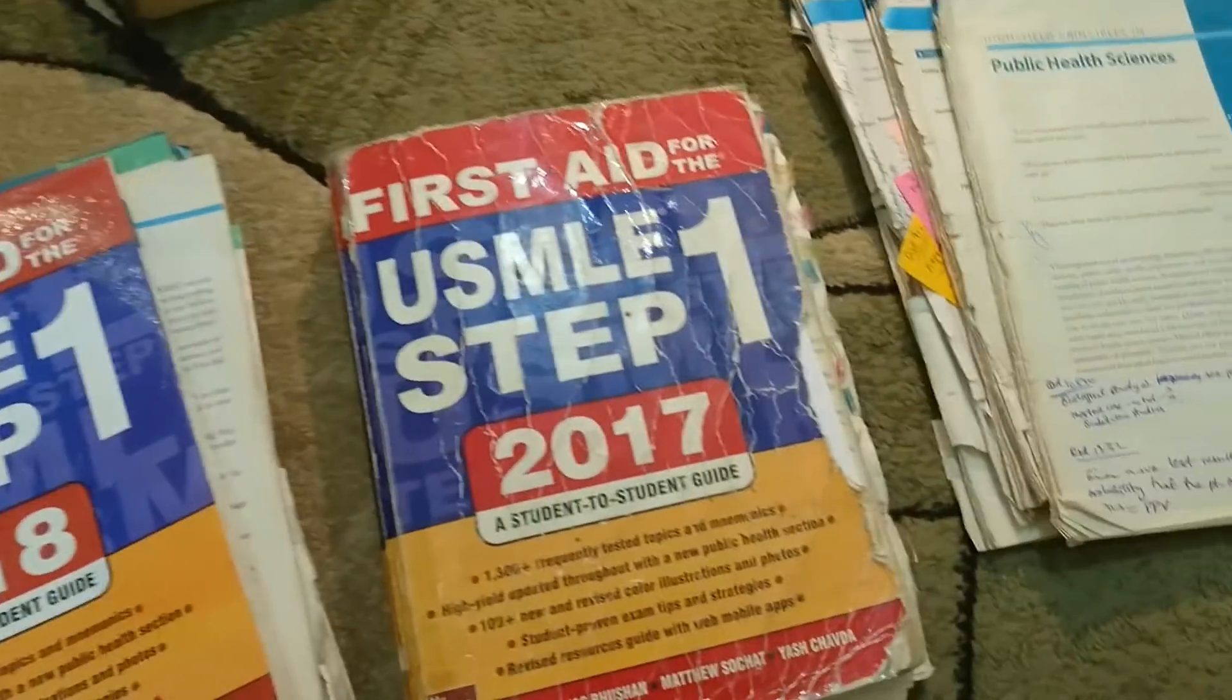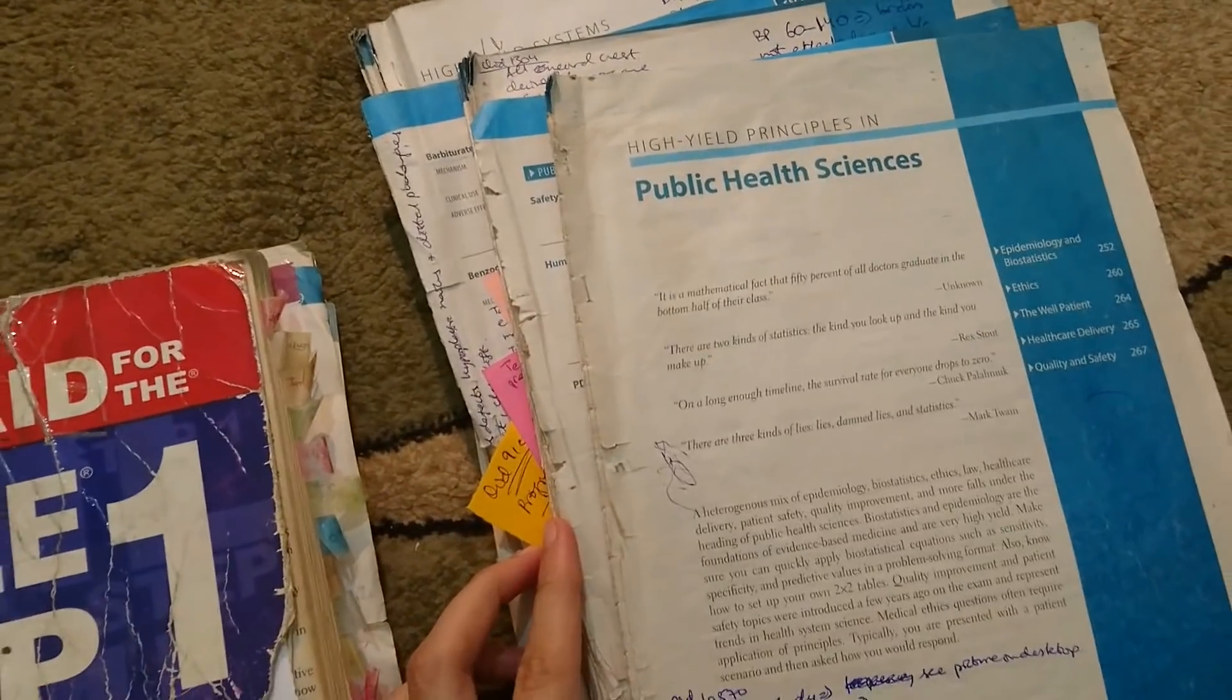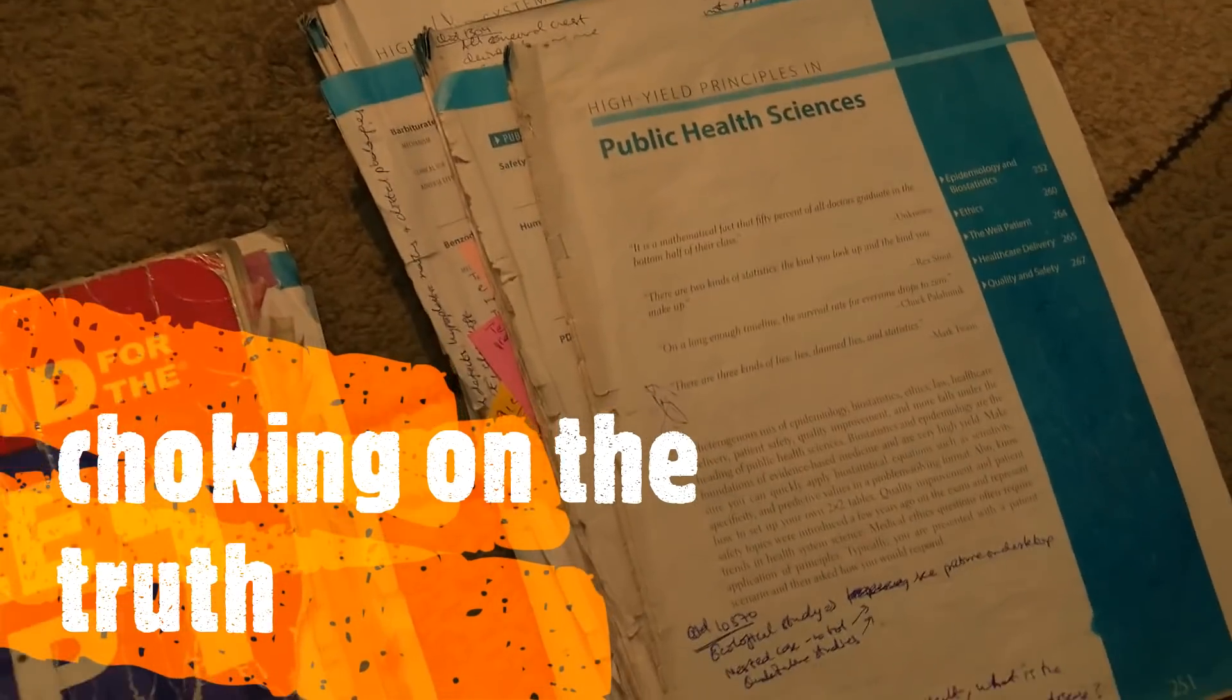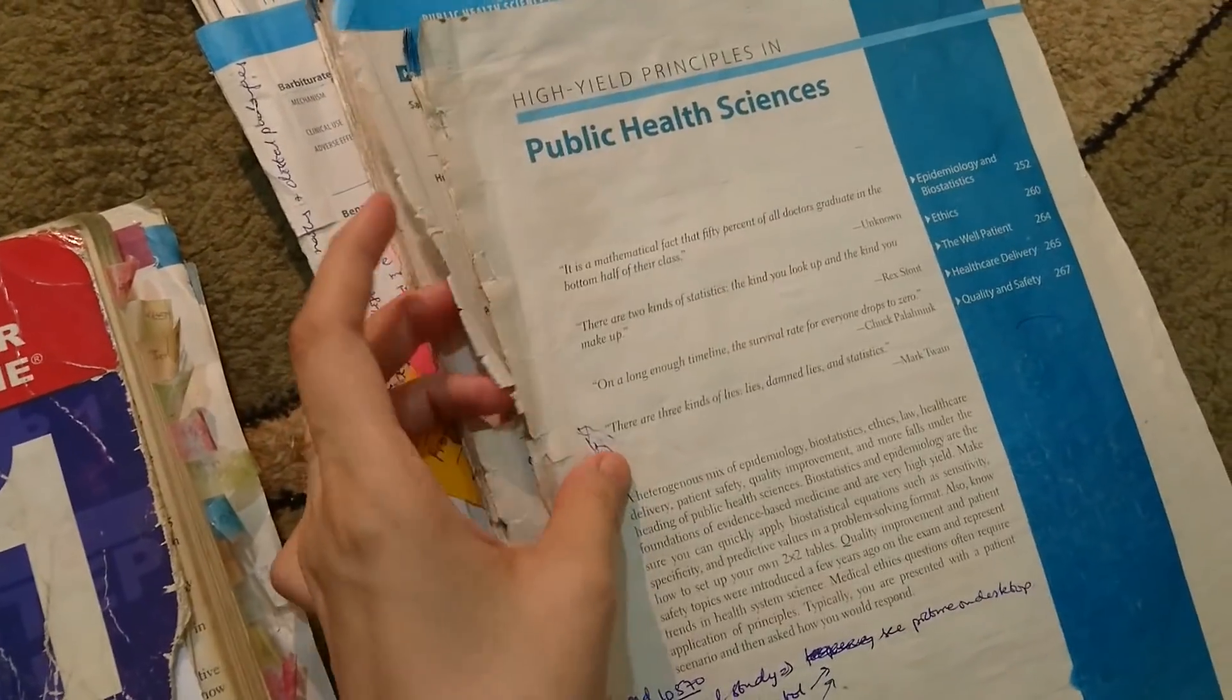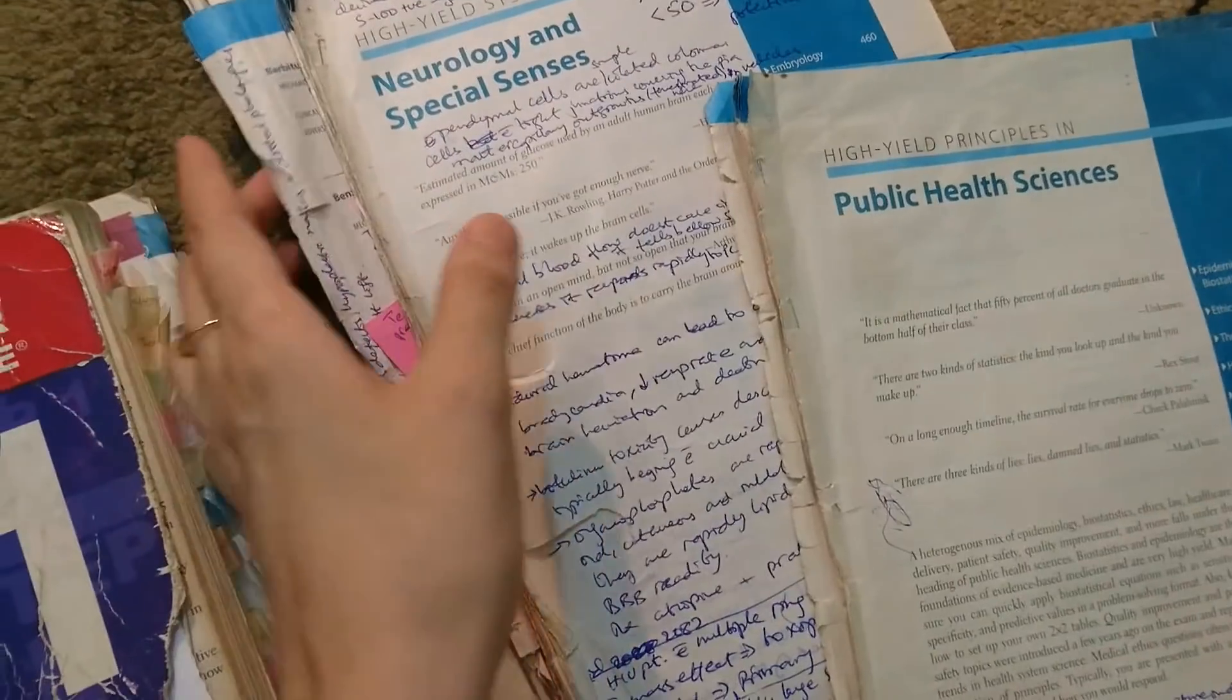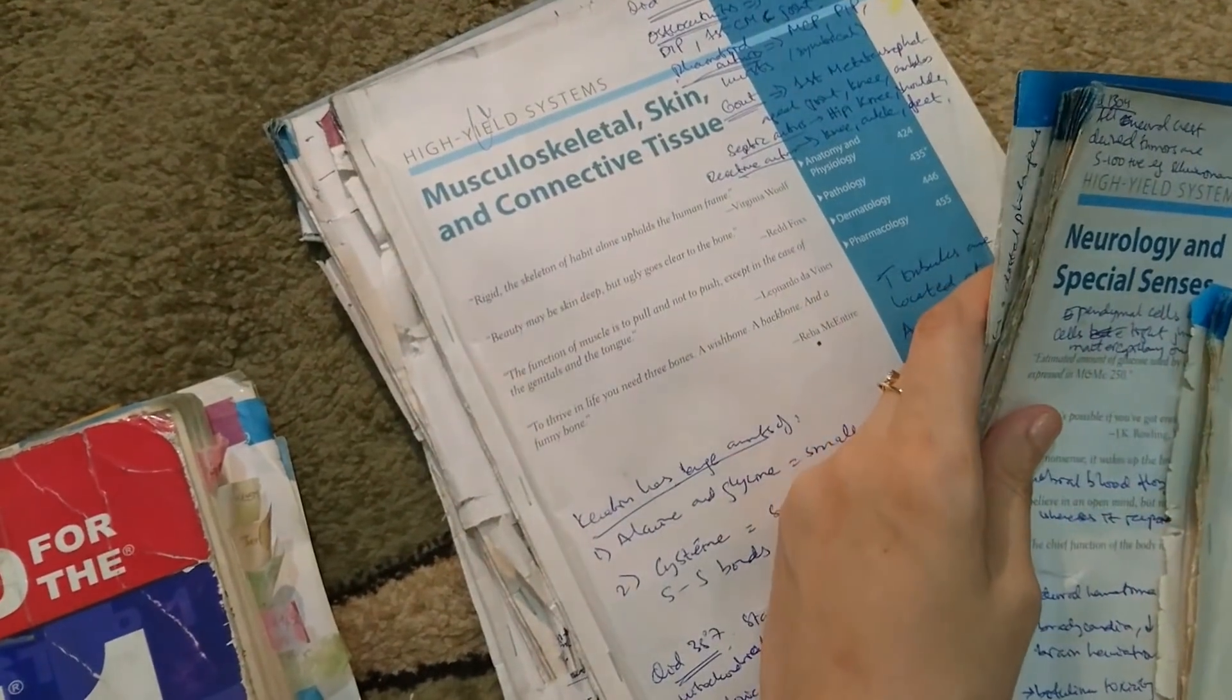I did something similar to that but instead of getting a spiral binding done, because of the person I am, I got them stapled together depending on the chapters. For example this is public health, and then this is neurology, and this is musculoskeletal and so on.